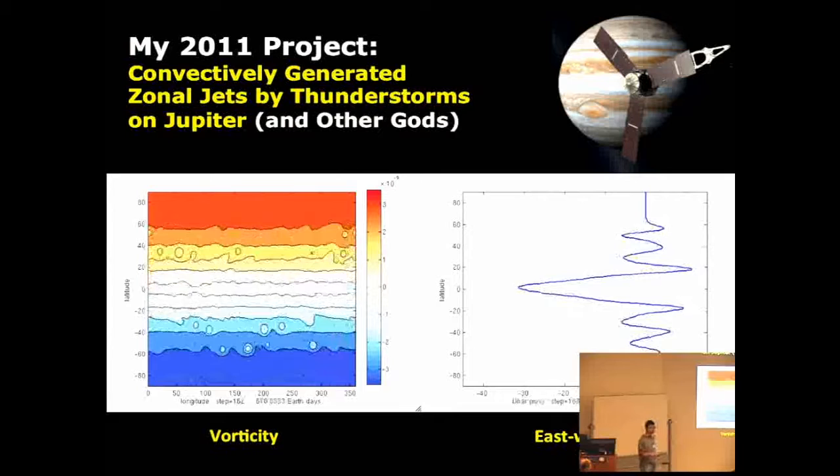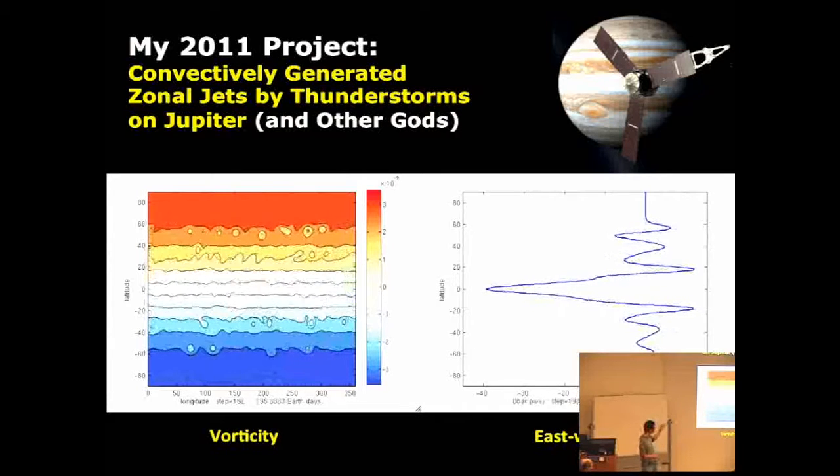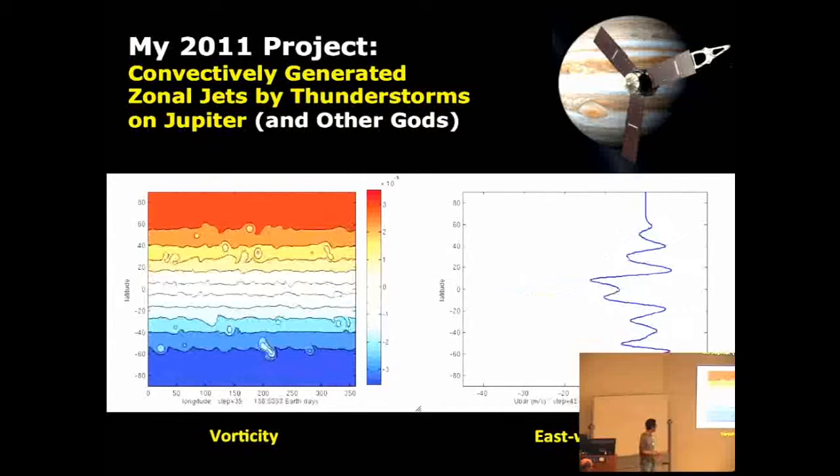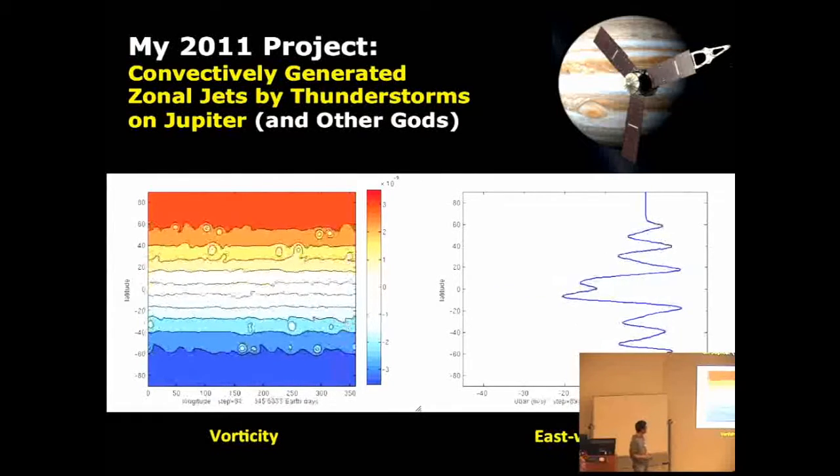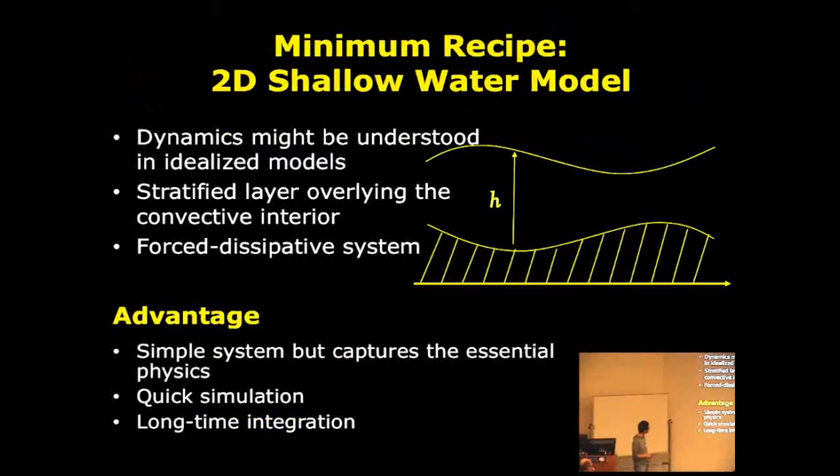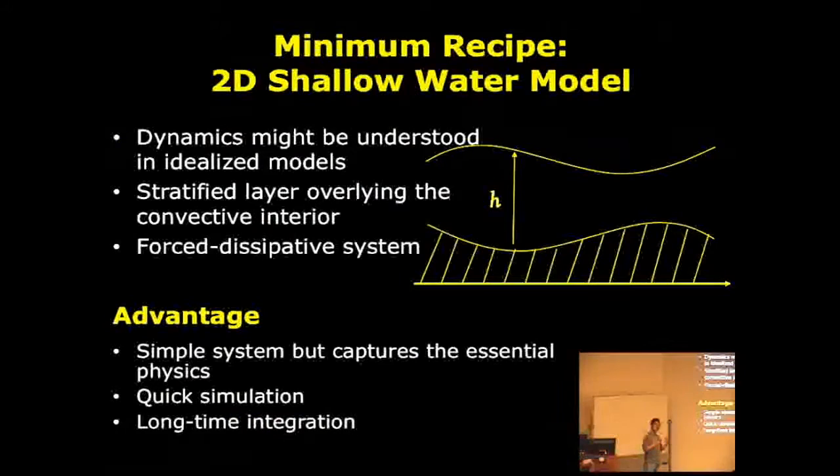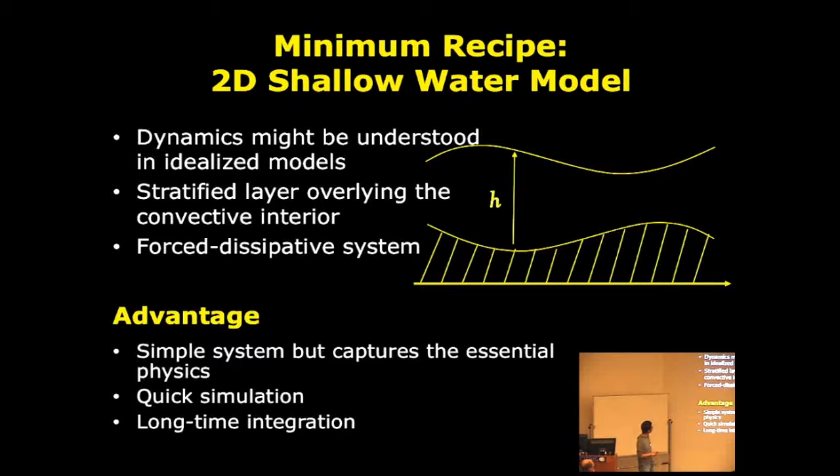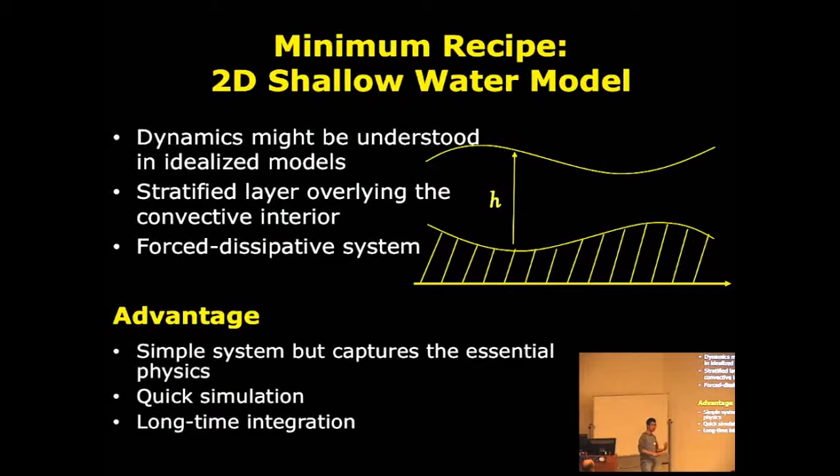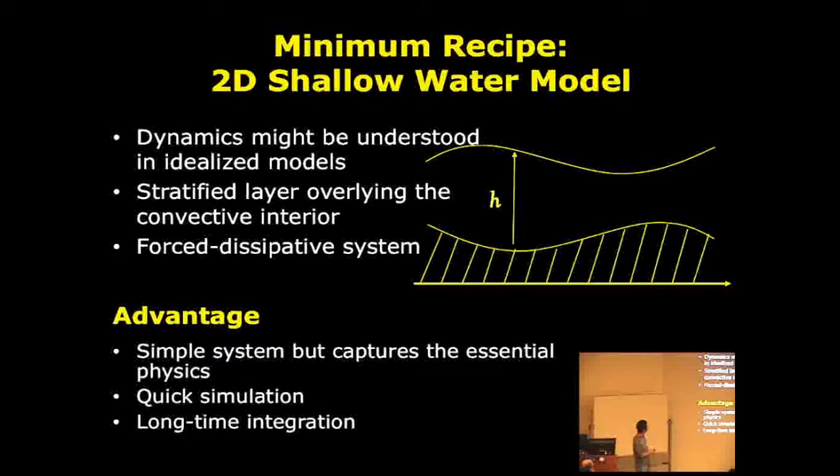Equatorial super-rotation for the Jupiter regime can only be generated in 3D simulations. This is 2D, so it's very different. But that actually really attracted me to think about this kind of stuff, how to use idealized models to understand things we observe. Basically the start point is we use a two-dimensional shallow water model. It's like a minimum recipe. You can actually understand general circulation, winds, and temperature distribution for giant planets. The first point is dynamics might be understood in idealized models.